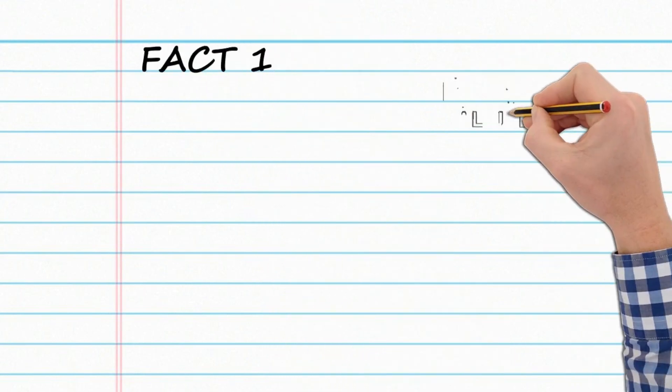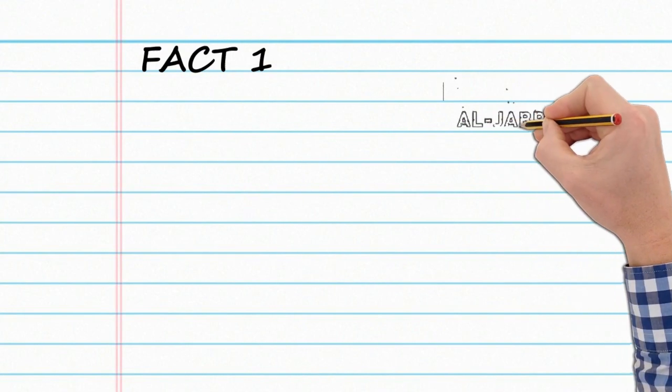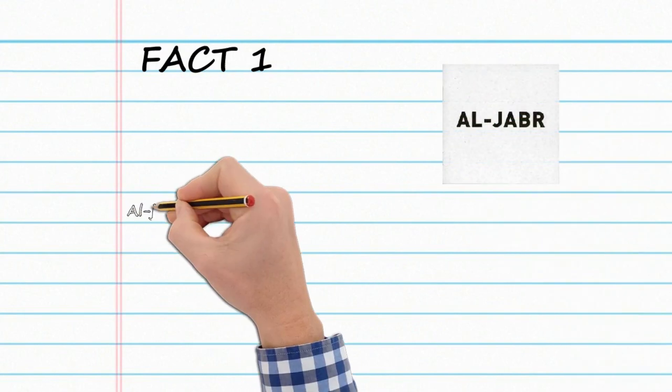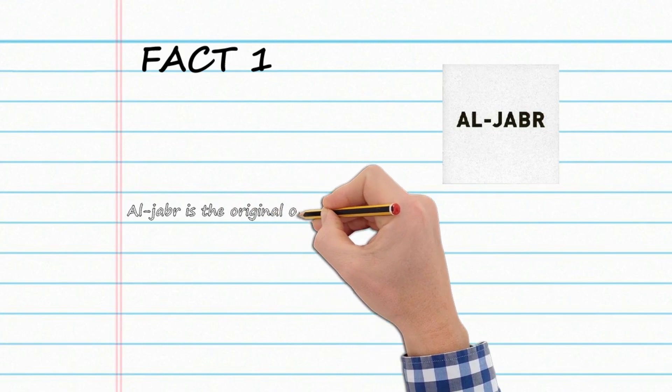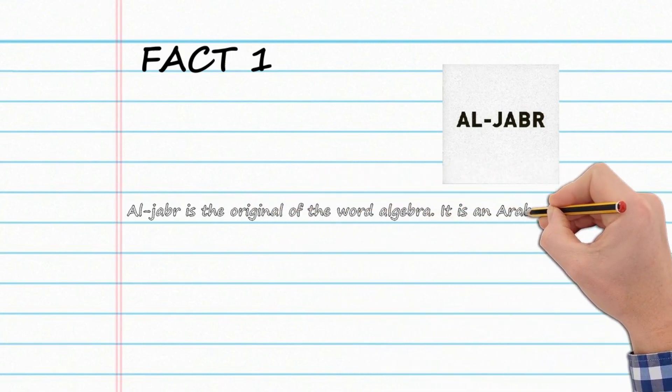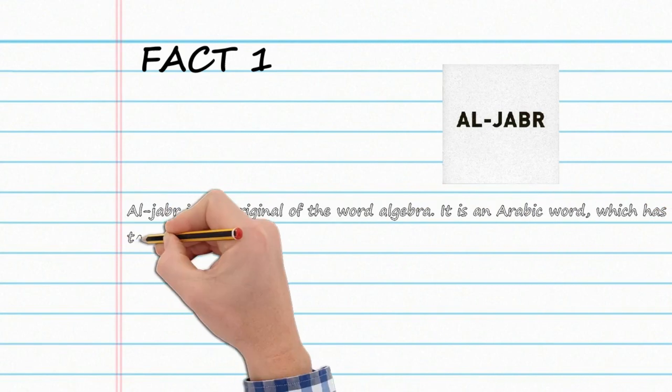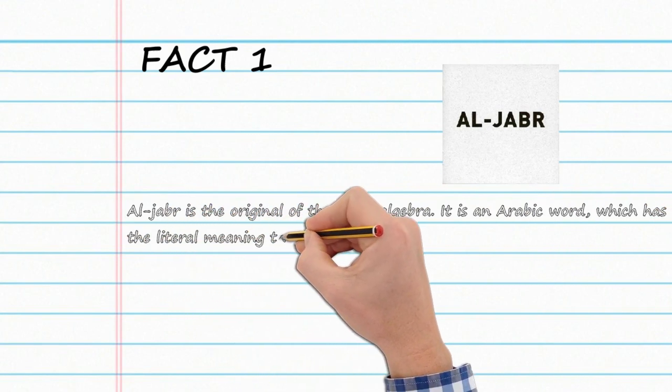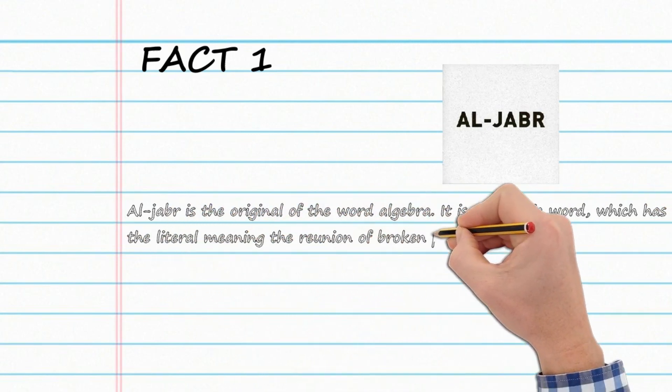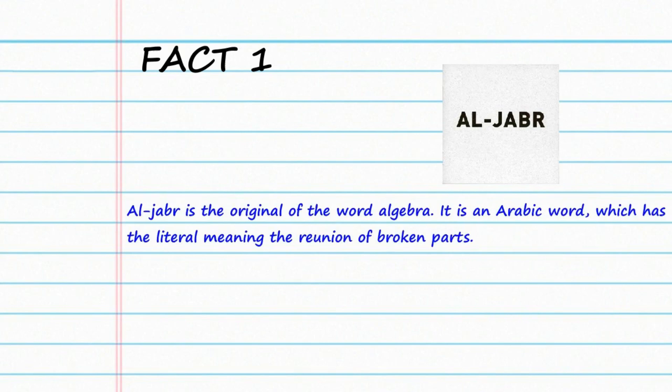Fact number 1: Al-Jabr is the origin of the word algebra. It is an Arabic word which has the literal meaning of the reunion of broken parts. Algebra is one of the most broad parts of mathematics. It is the study of mathematical symbols, and there are many fields in which young students can apply after graduation. The word algebra comes from the title of an early 9th century book, which means to balance.